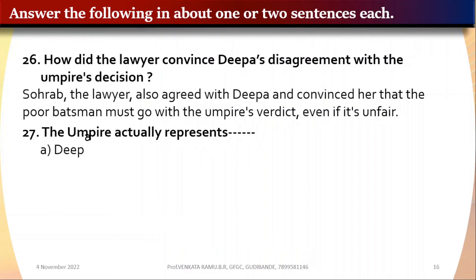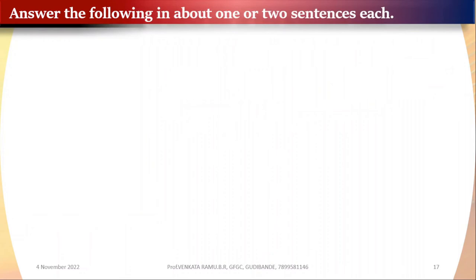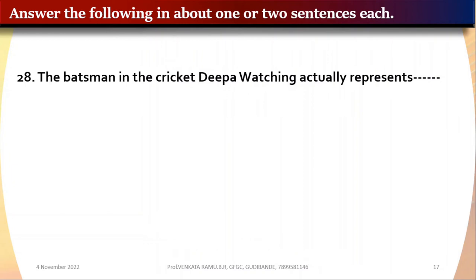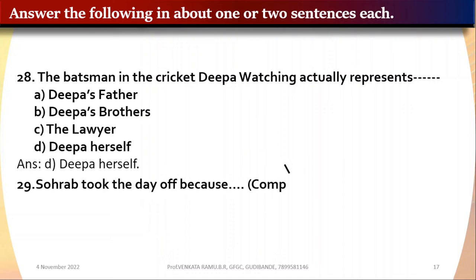Question 27: The umpire actually represents blank — option A: Deepa's father, option B: Deepa's brothers, option C: the lawyer, option D: Deepa herself. The answer is Deepa's father. Question 28: The batsman in the cricket scene Deepa is watching actually represents blank — same options. The answer is Deepa herself.